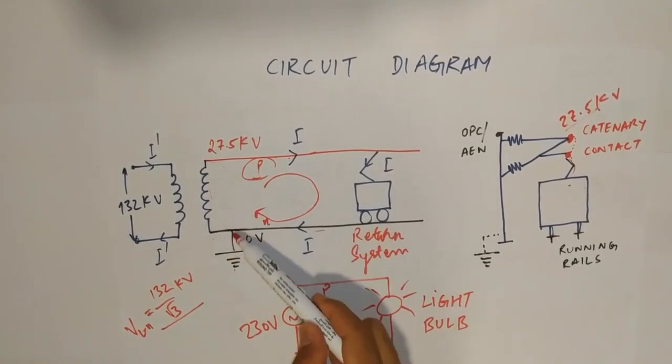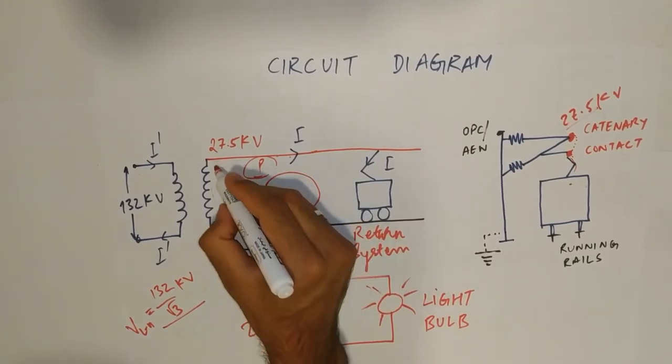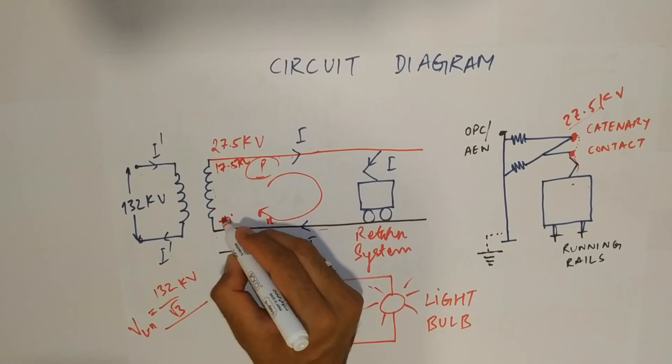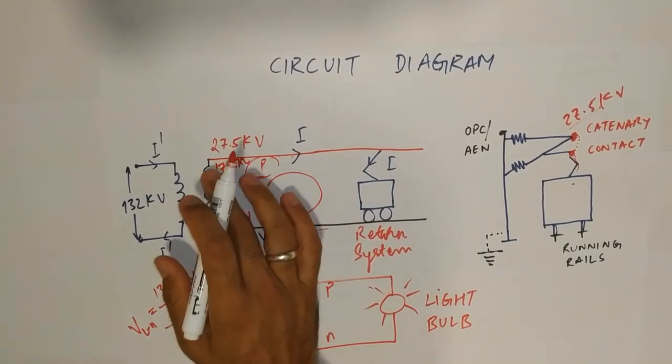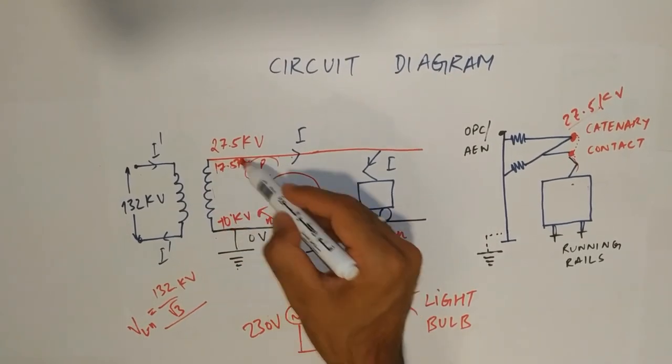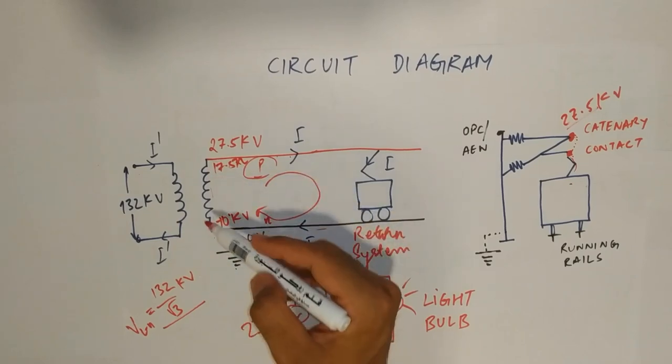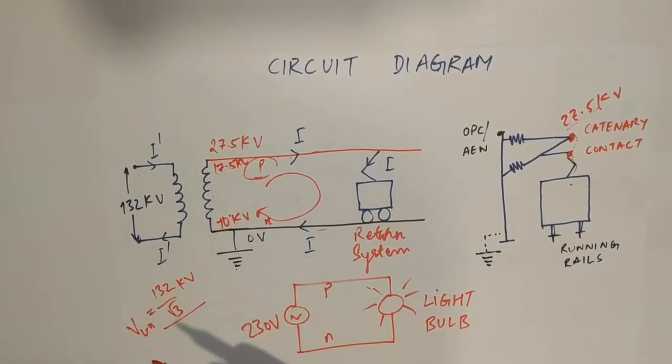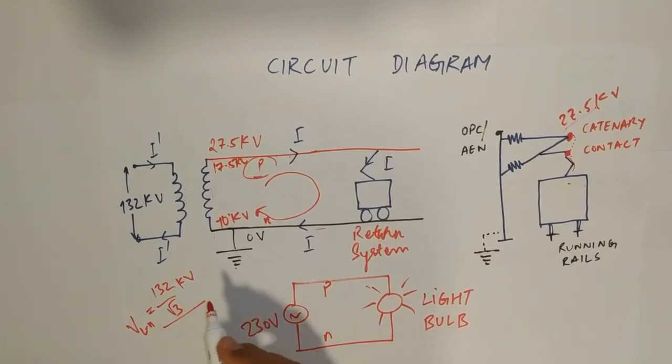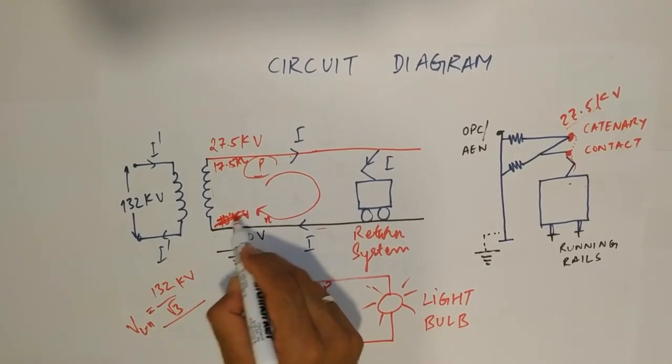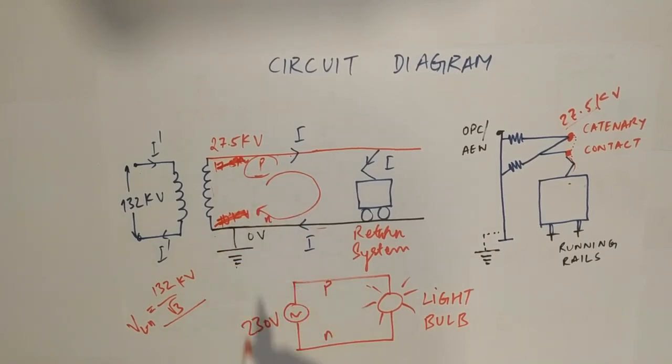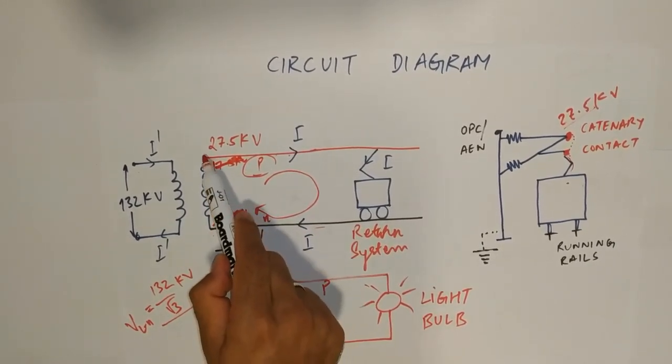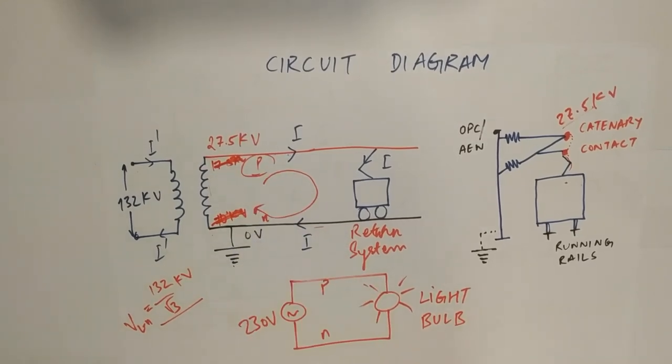Now, this voltage can be either 17.5 here and minus 10 KV. So, you will be getting 27.5 as the difference between these two points or it can be 15 and this can be minus 12.5 KV. But, to avoid this, what we do, we earth this point. Once you connect this point to earth, then you will get 27.5 KV at this point.